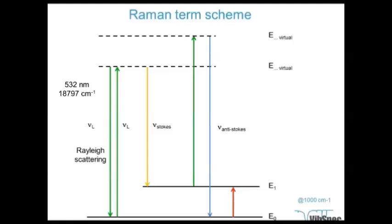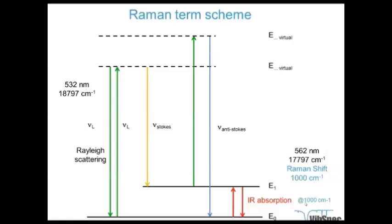Comparing Raman to infrared spectroscopy: in IR we look at absorption from the ground state to the first vibrational level, for instance at 1000 wavenumbers. The Stokes frequency in Raman gives a Raman shift of exactly the same frequency as observed in the infrared spectrum. For a 532 nm laser, the radiation becomes a longer wavelength — 562 nm instead of 532 nm — corresponding to a Raman shift of 1000 wavenumbers. This makes it possible to study mid-infrared absorptions using visible light with Raman spectroscopy.